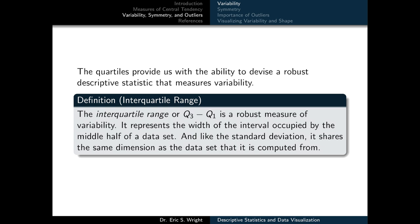Having a definition for quartiles provides us the ability to devise a robust descriptive statistic measuring variability — called the interquartile range. The interquartile range is the difference between the third quartile and the first quartile. It is a robust measure of variability, representing the width of the interval occupied by the middle half of the dataset. Like the standard deviation, it shares the same dimension as the dataset it is computed from.